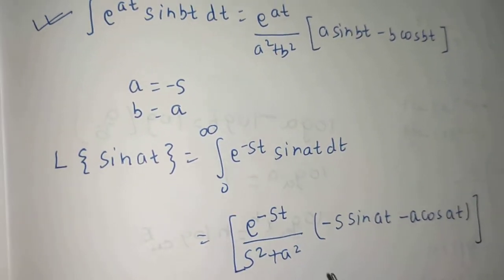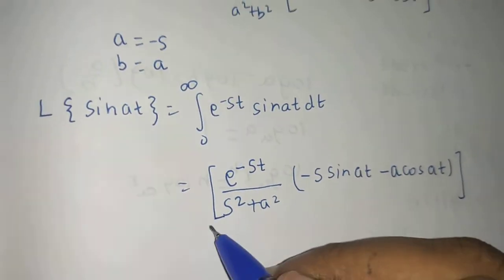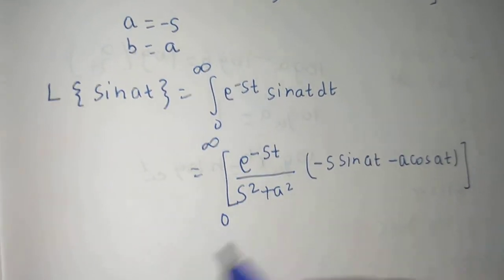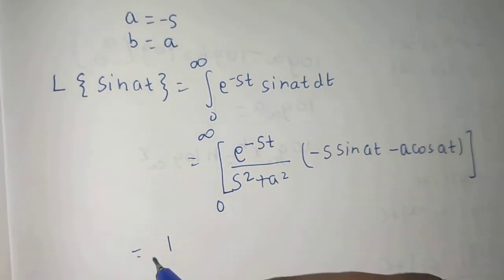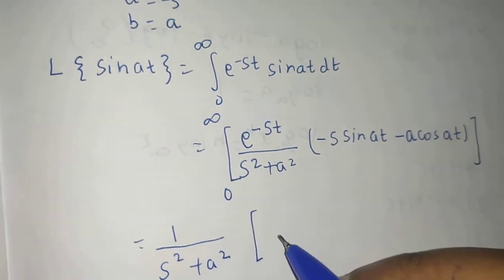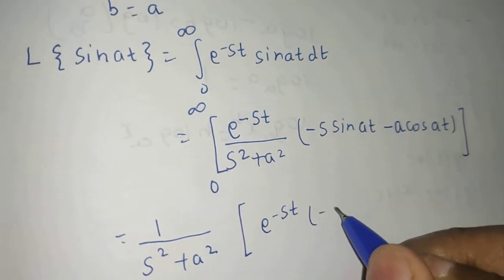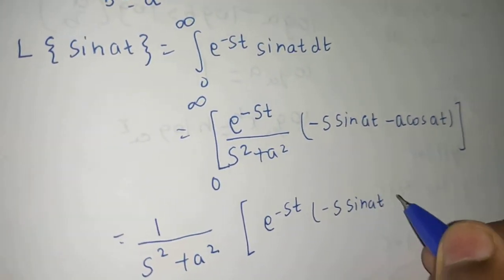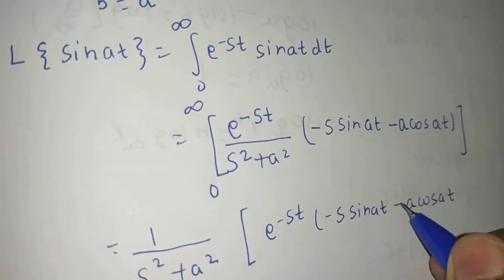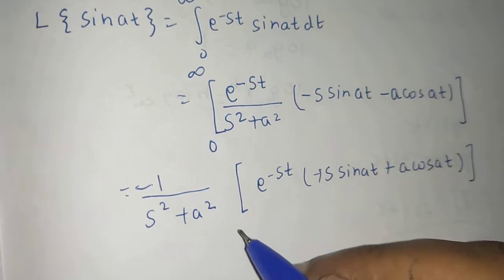So b is replaced by a and a is replaced by minus s. Now this is evaluated from 0 to infinity. We can take 1 upon s squared plus a squared out. We will be left with e to the power minus st times the quantity minus s sine at minus a cos at. We can also take the minus sign out.